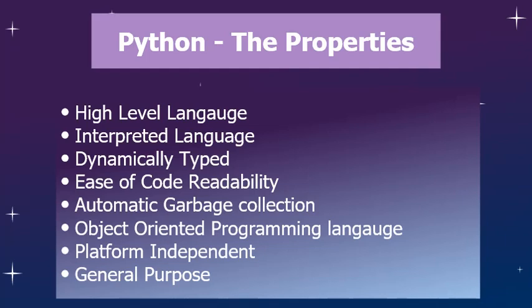The data type will be dynamically decided according to the value associated with the variable. Next is ease of code readability. Suppose you have a multiplication code written in Java, Python, C, and C++. When a newbie or someone who doesn't know programming sees that code, the probability of them understanding Python code is higher compared to other languages, because Python code is written in such a structured way that it's really easy to understand.